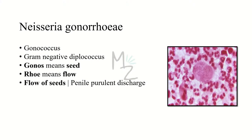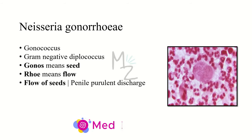Neisseria gonorrhea is also called gonococcus. It is a gram-negative diplococcus, which means that two cocci occur together and form a pair. The word gonorrhea has two parts: gonos, meaning seeds, and roi, meaning flow — so it means flow of seeds. Earlier it was termed as penile purulent discharge, which is why it is called flow of seeds. This organism is sexually transmitted and is responsible for causing sexually transmitted diseases, the STDs.